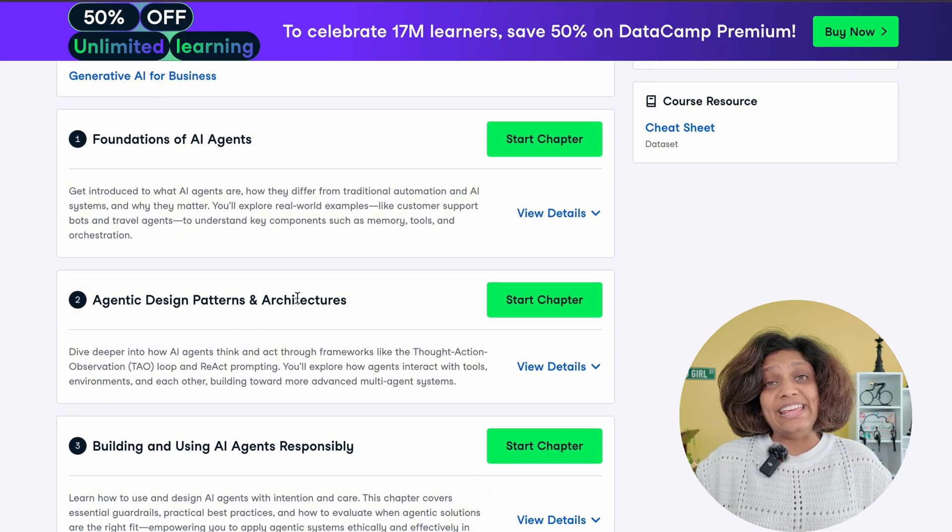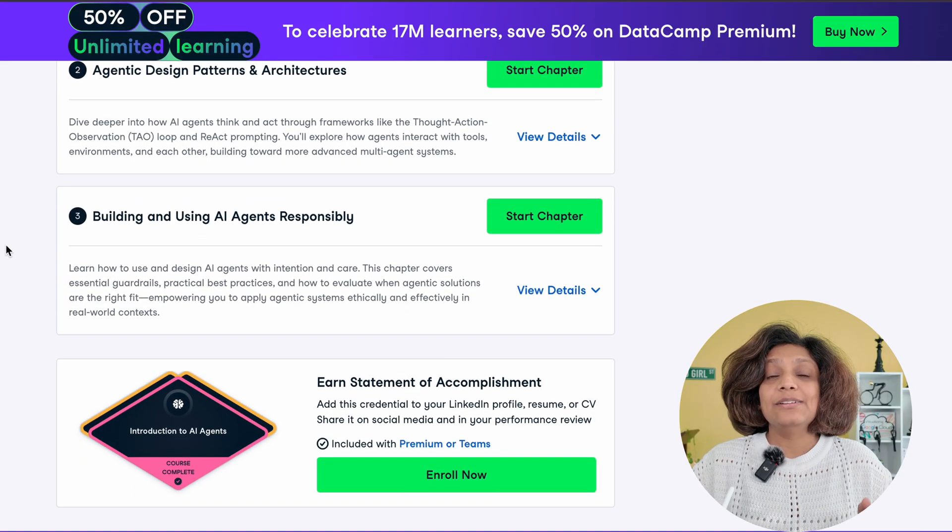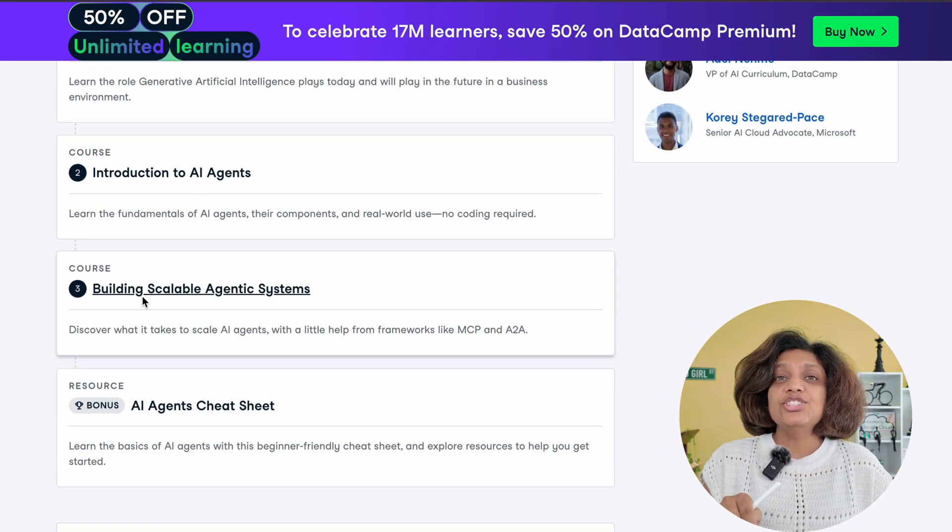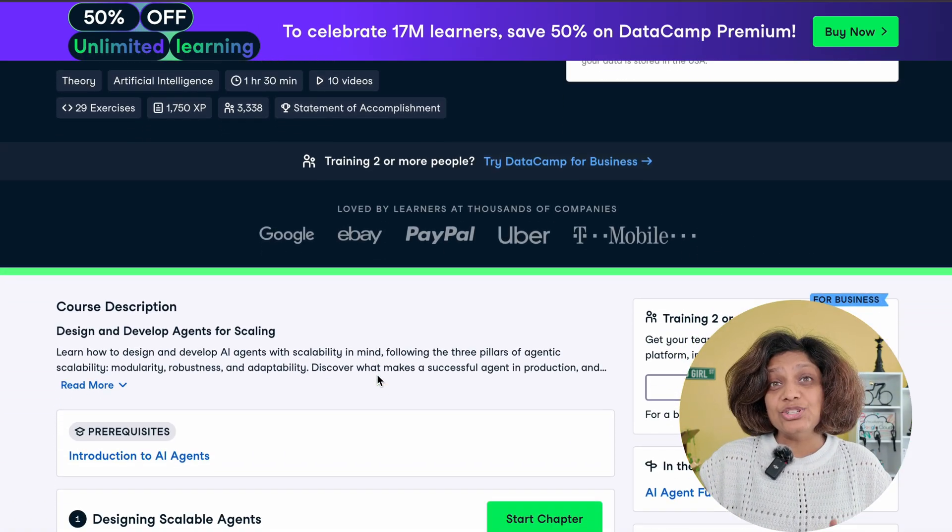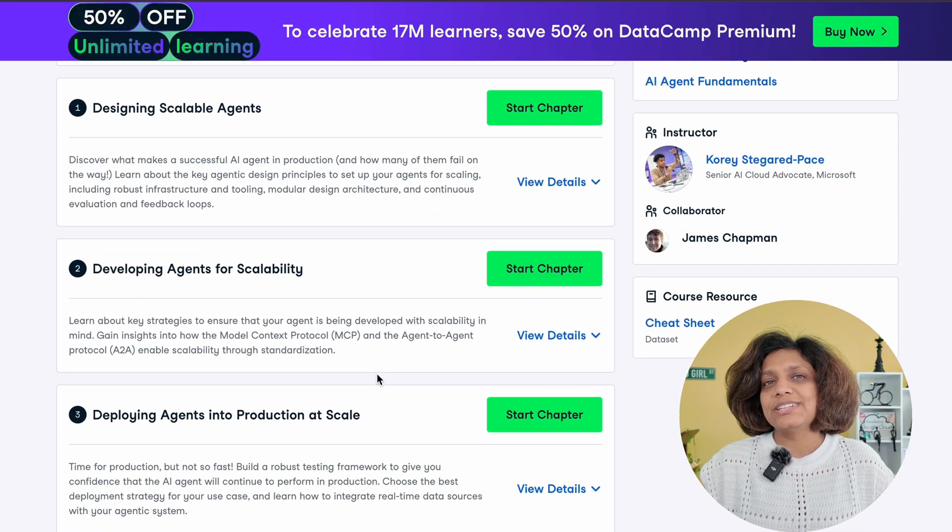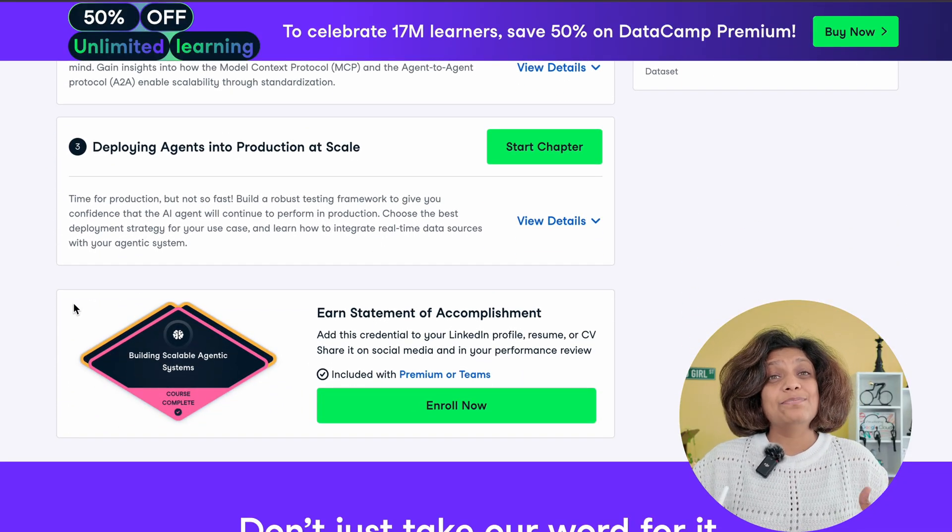And when you're ready to get hands-on, building scalable agentic systems teaches you the frameworks like MCP and A2A so you can build agentic systems that work in production, not just in theory. Plus, you get an AI agent's cheat sheet for quick reference. And when you're finished, you will earn a statement of accomplishment to boost your resume on LinkedIn. I genuinely recommend Datacamp. I literally learned Python through Datacamp years ago. Check out the link in the description and start for free today.